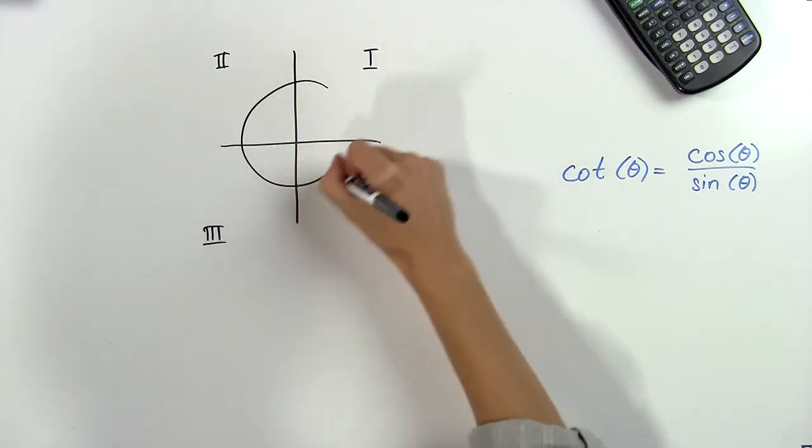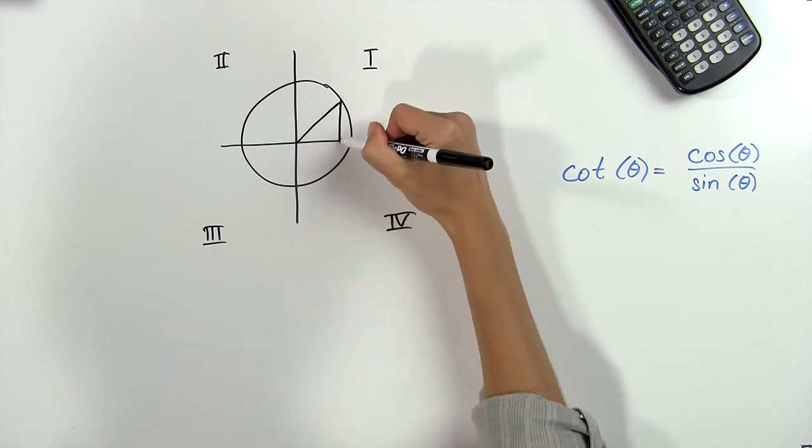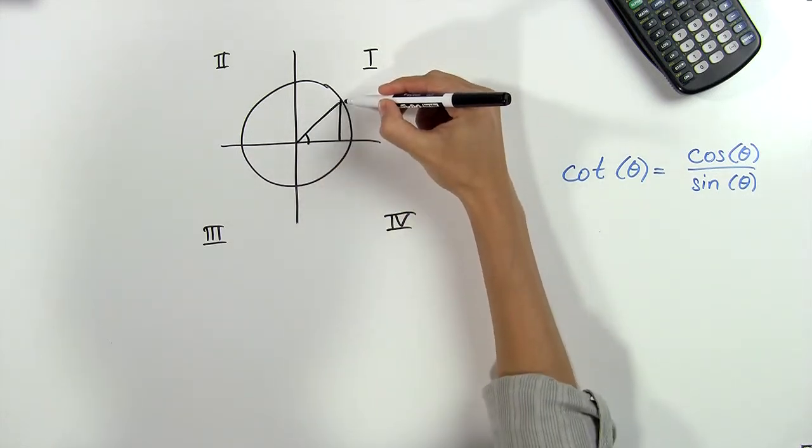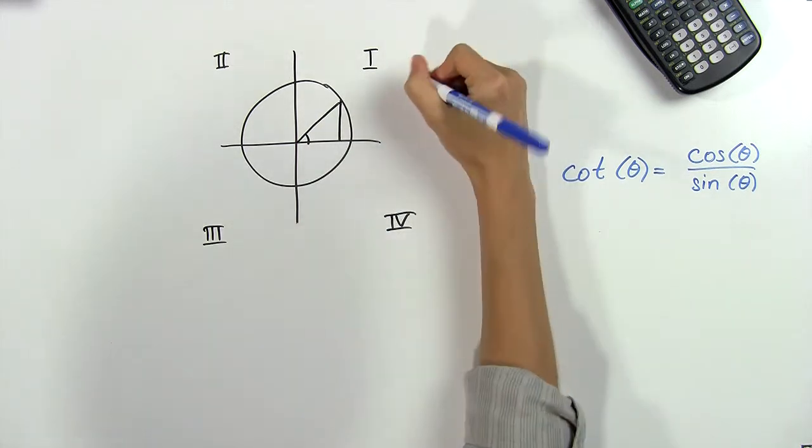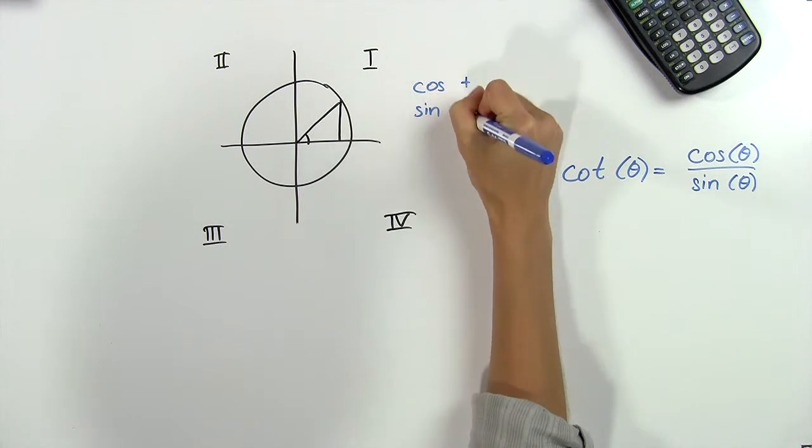So here's our unit circle, and if we have our angle in the first quadrant, then we know that both the x-coordinate and the y-coordinate are positive. This means that both the cosine and the sine are positive for this quadrant.